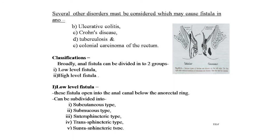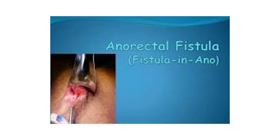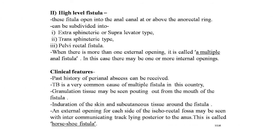Anal fistula can be broadly divided into two groups: low-level fistula and high-level fistula. Low-level fistula opens into the anal canal below the anorectal ring, and can be further subdivided into subcutaneous, submucous, intersphincteric, transphincteric, and suprasphincteric types. High-level fistula opens into the anal canal at or above the anorectal ring, subdivided into extrasphincteric or supraelevator type, transphincteric type, and pelvic rectal fistula. When there is more than one external opening, it is called a multiple anal fistula, which may have one or more internal openings.